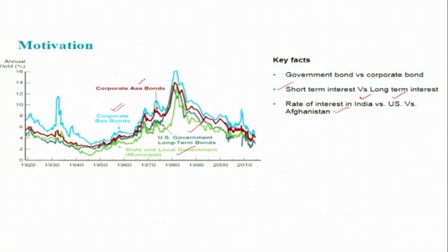Over time you can see that it fluctuates. For example, corporate BAA bonds were nearly 8% in 1920, but when you look at 2010, it was nearly 6%. So what are the factors that explain this kind of fluctuation? That is the main focus of this session and the subsequent few sessions.